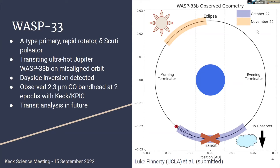WASP-33 is a delta-scuti pulsator. This is a problem if you're doing this in the optical because you're looking at lines that are both in the star and in the planet. It's less of a problem in the IR because we're looking specifically at CO and water, which we don't expect to see in an A-type star. So the pulsation becomes a photometric effect and is a bit easier to calibrate away.